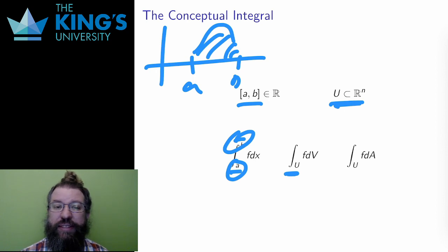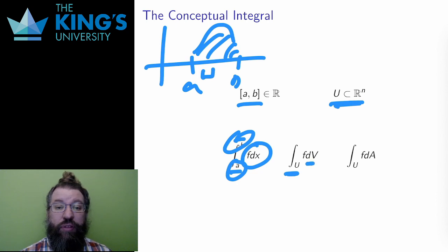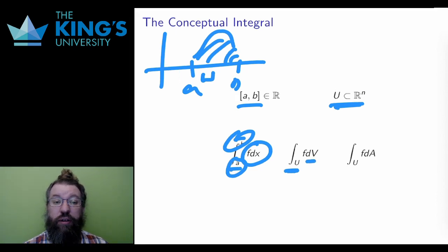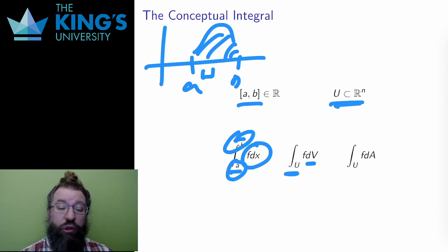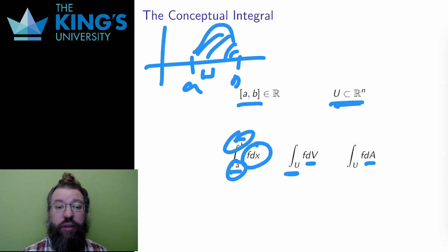The dx in the single variable integral could be thought of as an infinitesimal piece of length. Instead of that, the notation now measures an infinitesimal piece of the domain. If the domain is in R3 or in higher dimensions, then this is a piece of volume or hypervolume, which is the higher dimensional version of that, and it's written dV. If f is just a two variable function, the domain has area, so this is written dA.